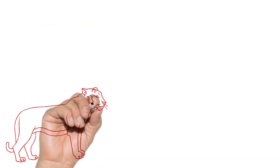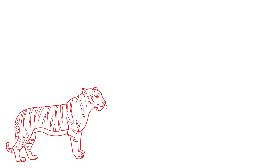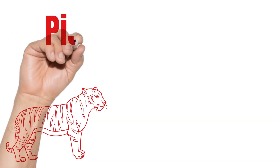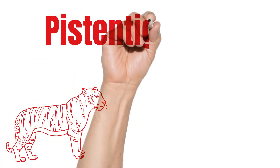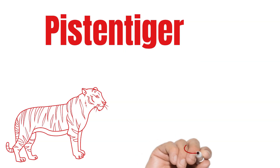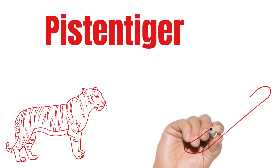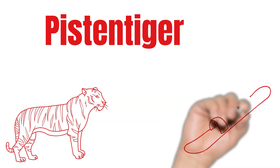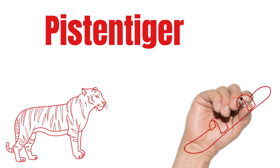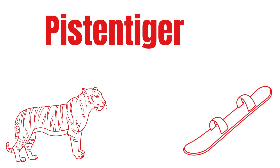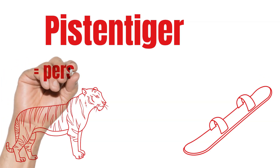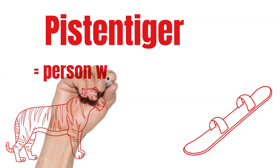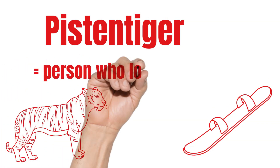Finally, in Austria you can find many Pistentiger. Any wild guess what Pistentiger could mean? Piste is the German word for slope, so a person who loves skiing is called Pistentiger. Pistentiger.